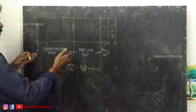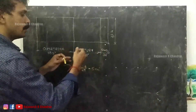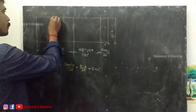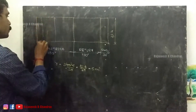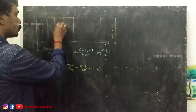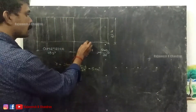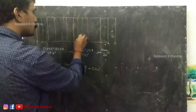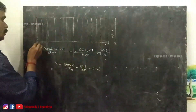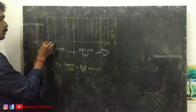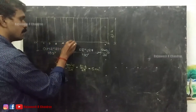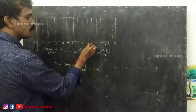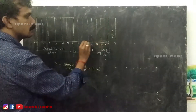Now we construct the displacement diagram. This shows outstroke and return stroke. Divide the outstroke into six equal parts and the return stroke also into six equal parts. The divisions are labeled 0, 1, 2, 3, 4, 5, 6, then 7, 8, 9, 10, 11, and 12, with the remaining portion for dwell.